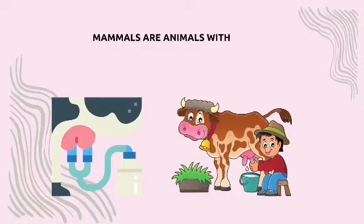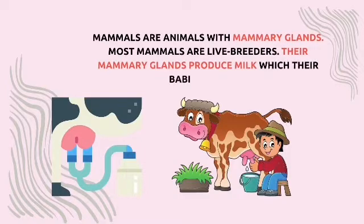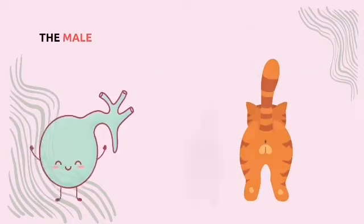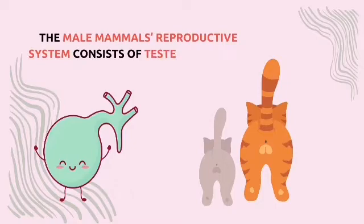Mammals are animals with mammary glands. Most mammals are live breeders. Their mammary glands produce milk, which their babies feed on. The male mammal's reproductive system consists of testis, ducts, and penis.